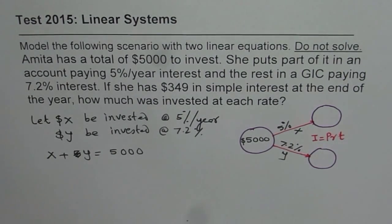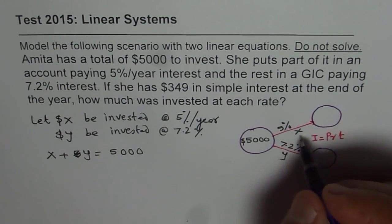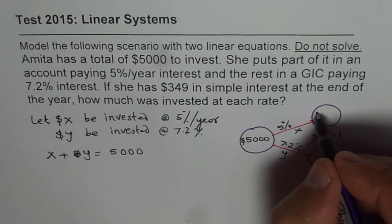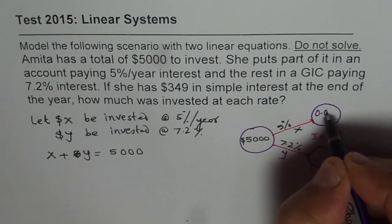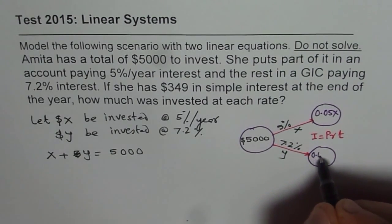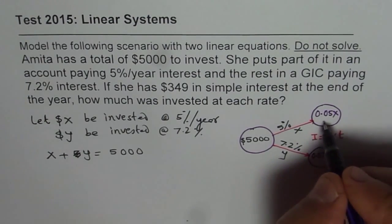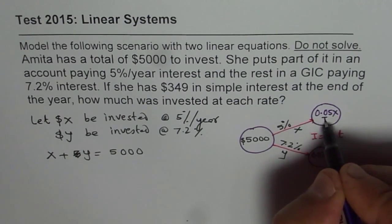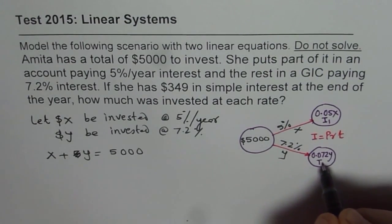Rate of interest is 5%. 5% means 5 divided by 100 or 0.05. So it would be 5% of X, which means 0.05X. On the other hand, we have 0.072 of Y and that is the interest earned. So these are the interest, first interest and the second interest.